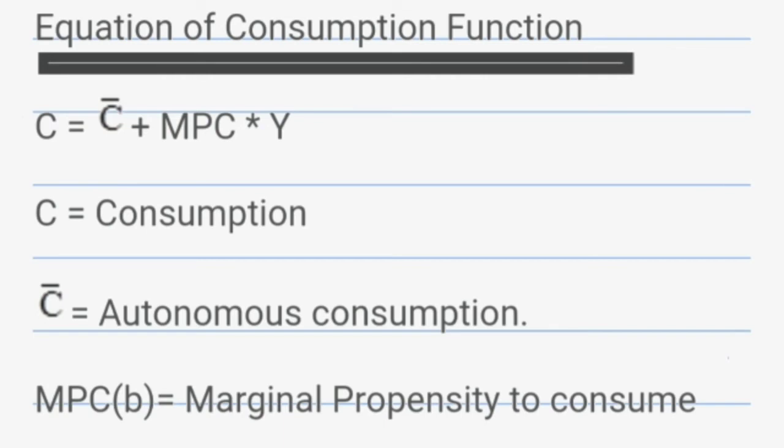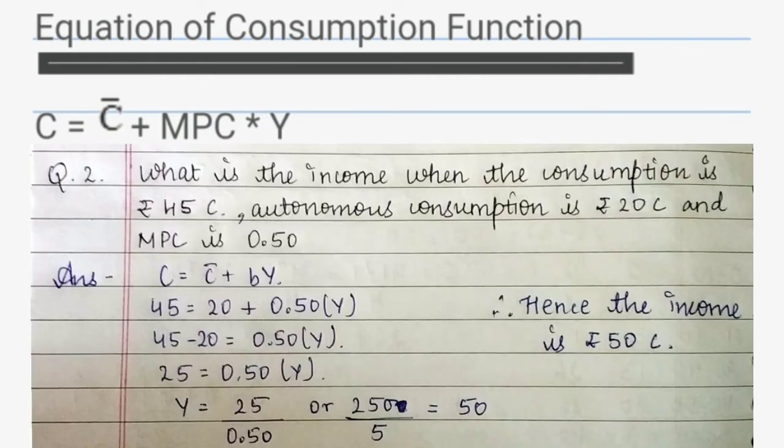Let's do one more question of this type. The question says what is the income when the consumption is rupees 45 crore, autonomous consumption is rupees 20 crore and MPC is 0.50. Please pay attention because here the question is asking to calculate the value of income and not the value of consumption because the value of consumption is already given. According to the equation, after putting the values you will get the value of income as rupees 50 crore.